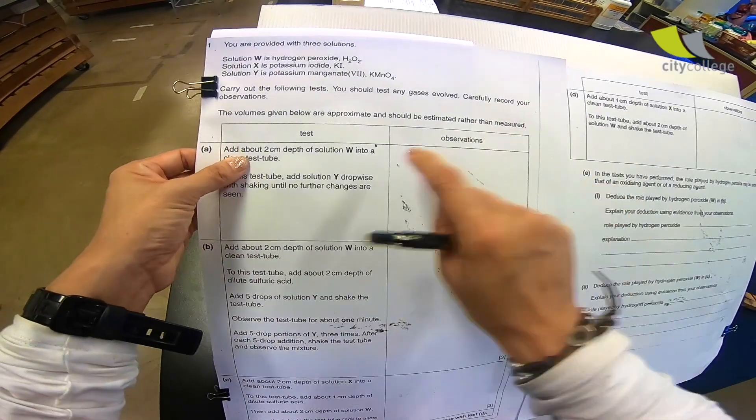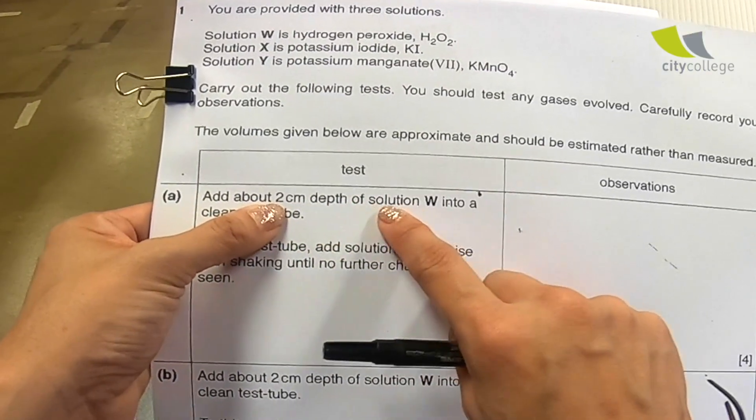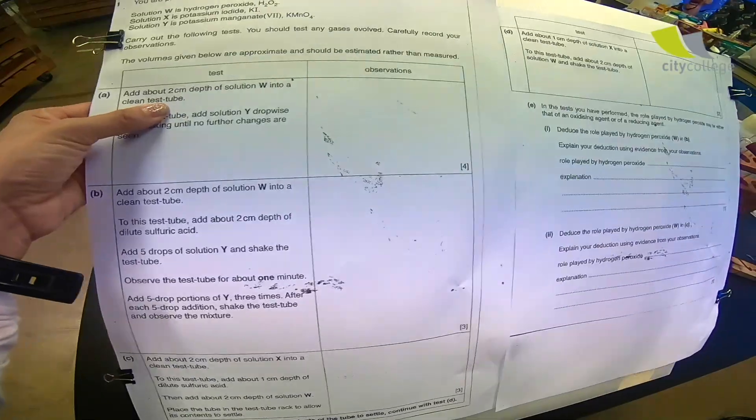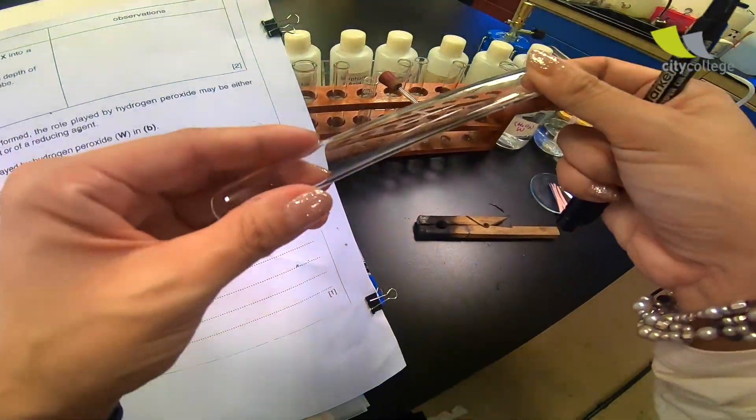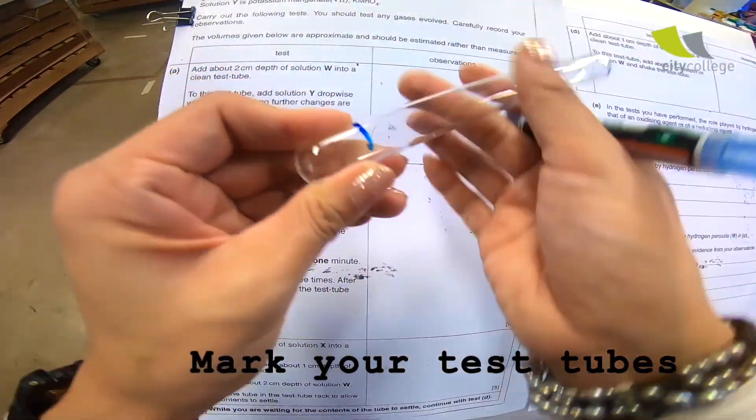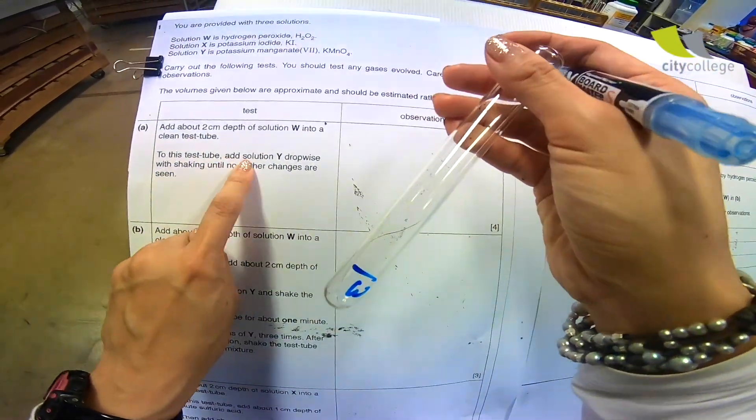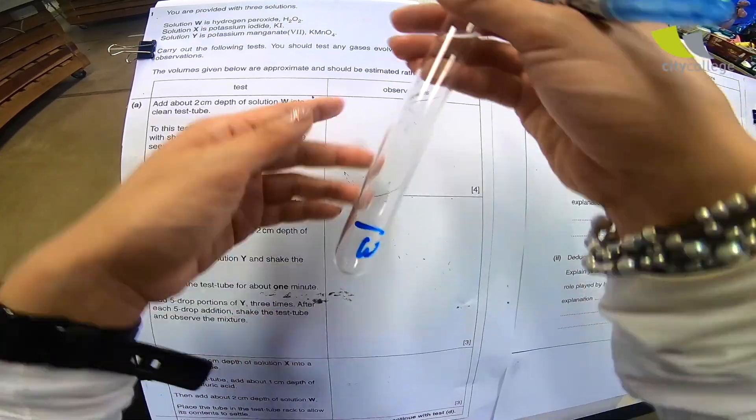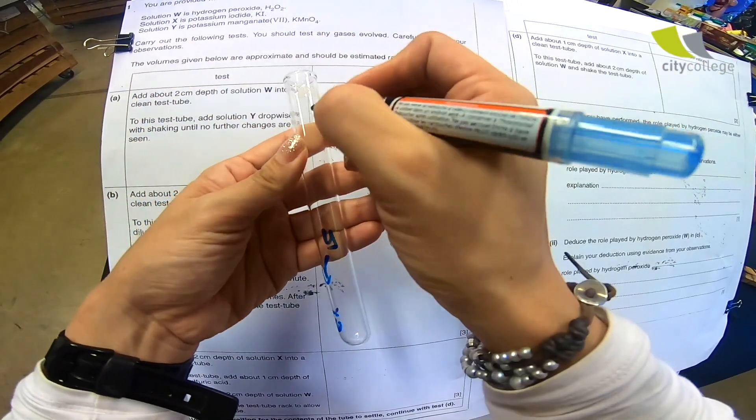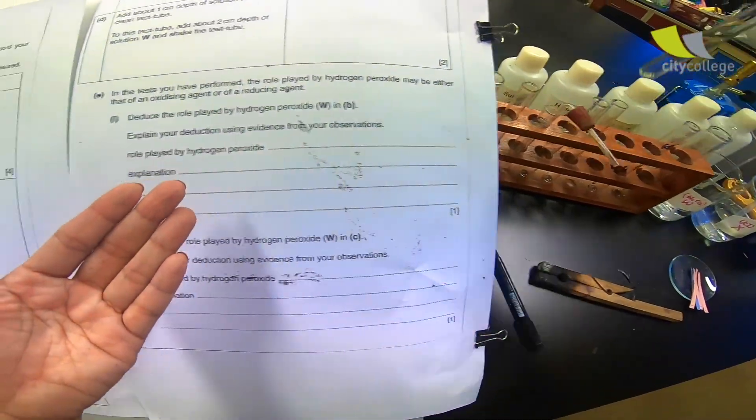So let's start to mark our test tube. Step 1: Add about 2 cm depth of solution W into a clean test tube. Take your test tube. 2 cm. W. And to this test tube, add solution Y dropwise. You're supposed to add Y dropwise. So this is my part A. I just need to label. Put it back to the rack.